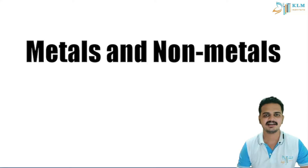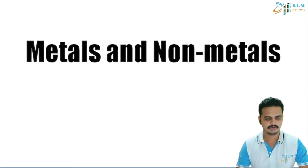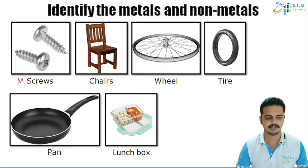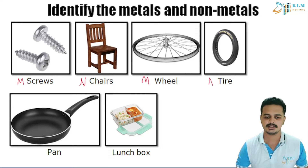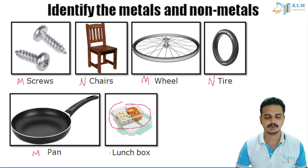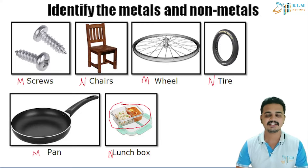Hello students, hope you are doing great. I am Revan Siddhaya, your chemistry educator at KLM Institute. Today's topic under chemistry will be metals and non-metals. If I tell you to identify among these objects which is a metal or a non-metal — screws are metal, chair is a non-metal, wheel is a metal, tire is non-metal, cooking pan is a metal, and a glass lunch box is a non-metal. You identified these by their physical properties.